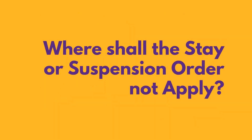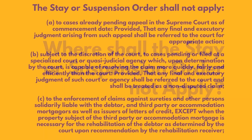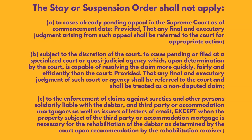Where shall the stay or suspension order not apply? The stay or suspension order shall not apply: first, to cases already pending in appeal in the Supreme Court as of commencement date, provided that any final and executory judgment arising from such appeal shall be referred to the court for appropriate action. Second, subject to the discretion of the court, to cases pending or filed at a specialized court or quasi-judicial agency which, upon determination by the court, is capable of resolving the claim more quickly, fairly, and efficiently than the court, provided that any final and executory judgment of such court or agency shall be referred to the court and shall be treated as a non-dispute claim.